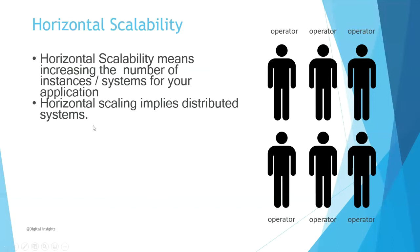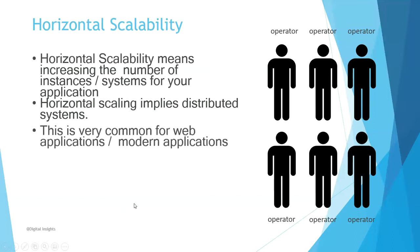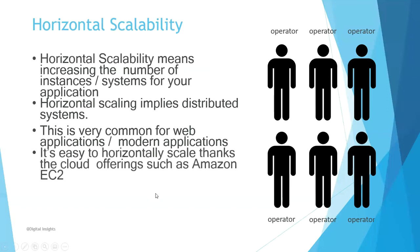Horizontal scaling implies distributed systems. This is very common for web applications and modern applications. It's easy to horizontally scale thanks to the cloud offerings such as Amazon EC2.